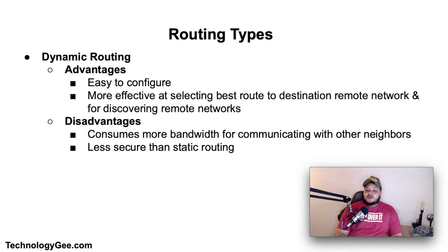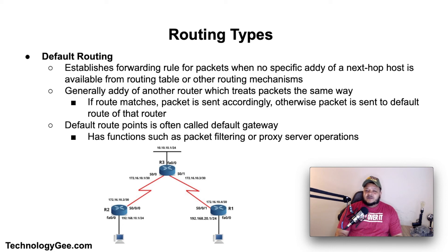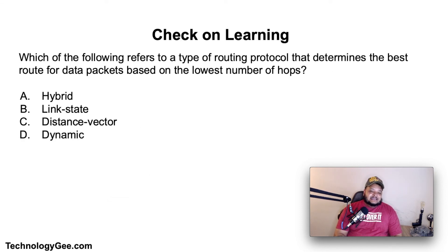Some disadvantages of dynamic routing are that it consumes more bandwidth for communicating with other neighbors and is less secure than static routing. Then we have default routing. Default routing is a configuration of the internet protocol that establishes a forwarding rule for packets where no specific address of a next hop host is available from the routing table or other routing mechanisms. If a route matches, the packet is forwarded accordingly; otherwise, the packet is forwarded to the default route of that router. The device to which the default route points is often called the default gateway, and it often carries out other functions such as packet filtering or proxy server operations.